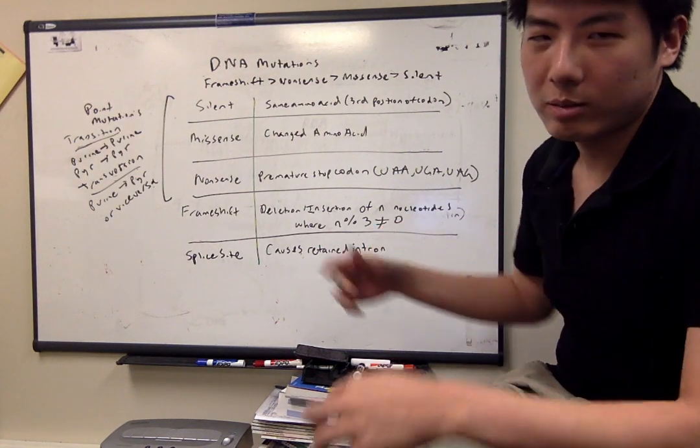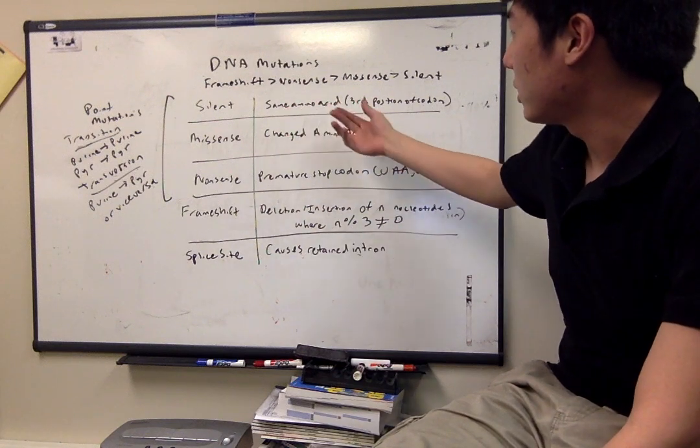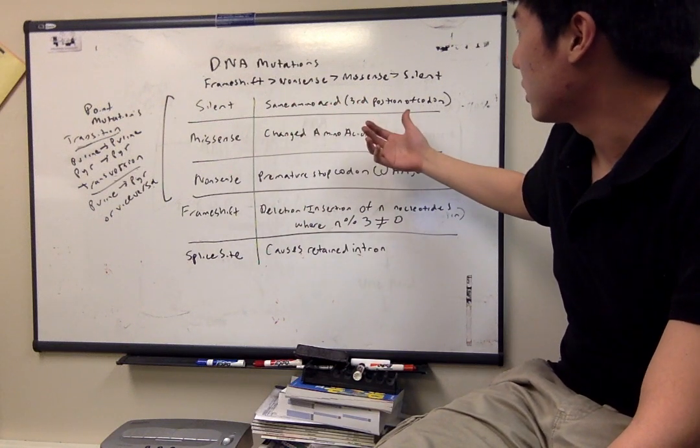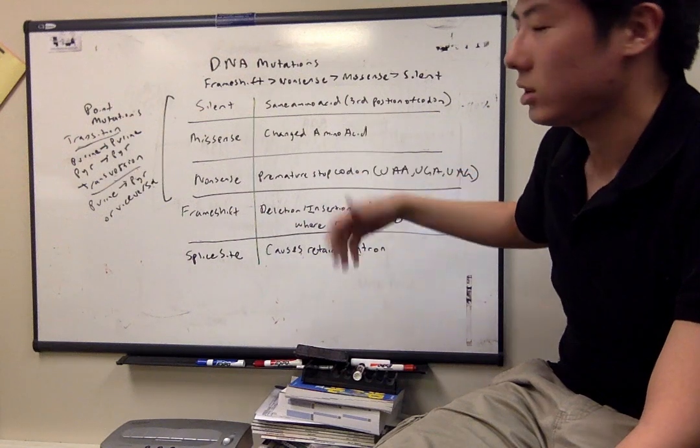In order of severity, frameshift mutations are the worst, followed by nonsense mutations, then missense mutations, and silent mutations.